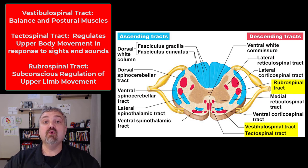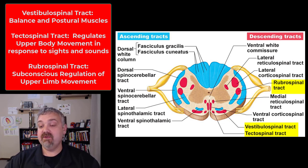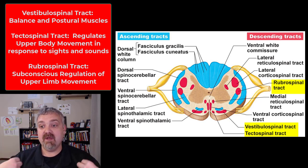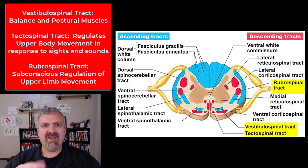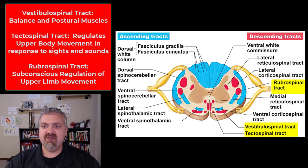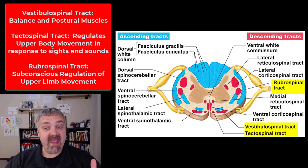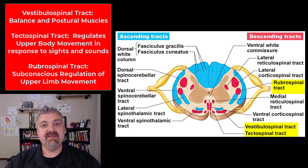The last group is the rubrospinal tract — rubro means red, from the red nucleus. This is going to be subconscious regulation of upper limb muscle tone and movement. So those are all the descending pathways. The corticospinal tracts are the only ones I really expect you to know much about, but those are all your descending motor pathways, as well as the functional map of where this information is coming from — the motor homunculus. I hope this helps. Have a wonderful day. Be blessed.